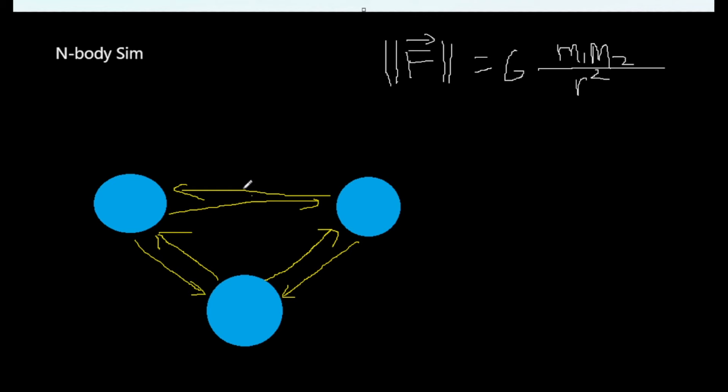What we have now is called a three-body problem. When you have more than two bodies in an n-body simulation, it becomes more chaotic and unpredictable in terms of where the particles will end up or what their velocities will be. Now we can transition to the actual simulation element of the video, which will also provide a better visualization of what the n-body simulation is.